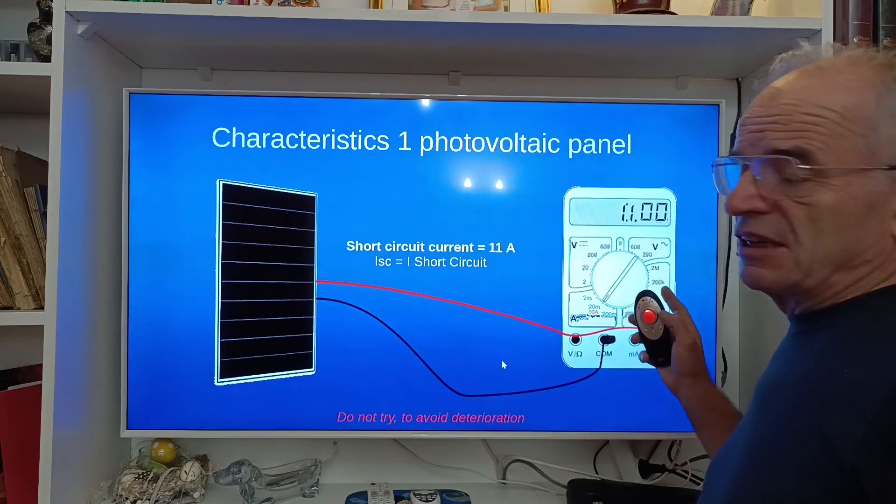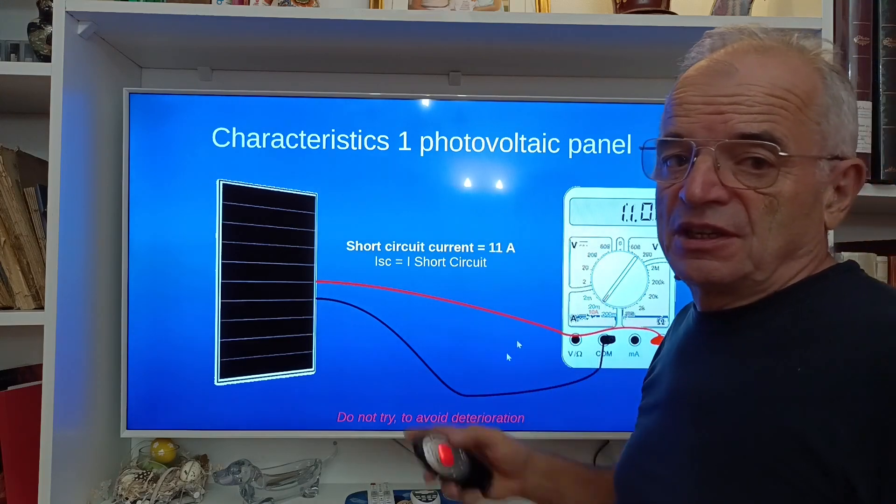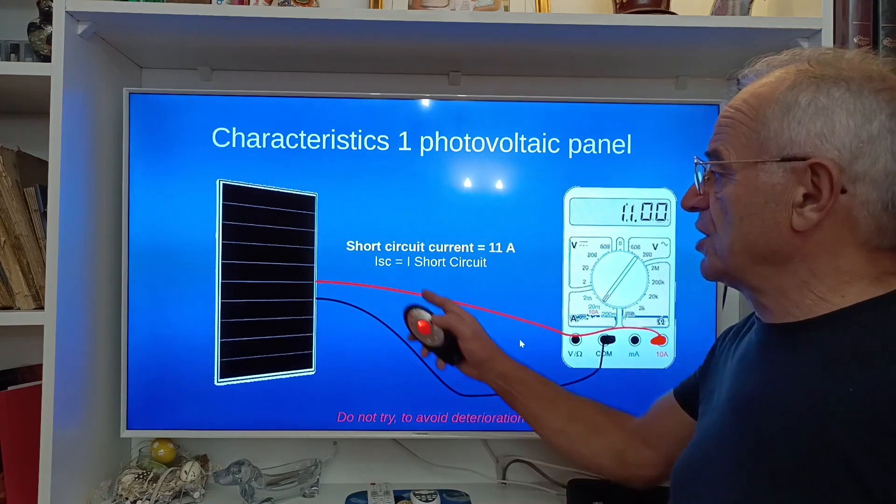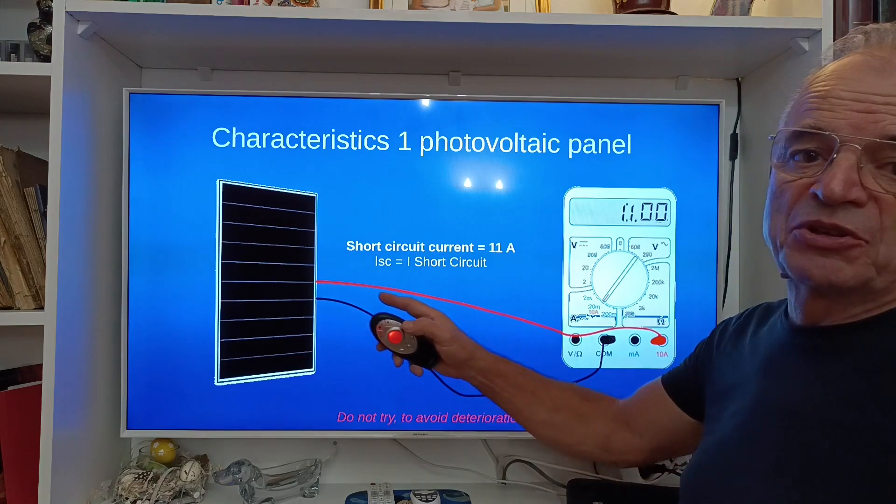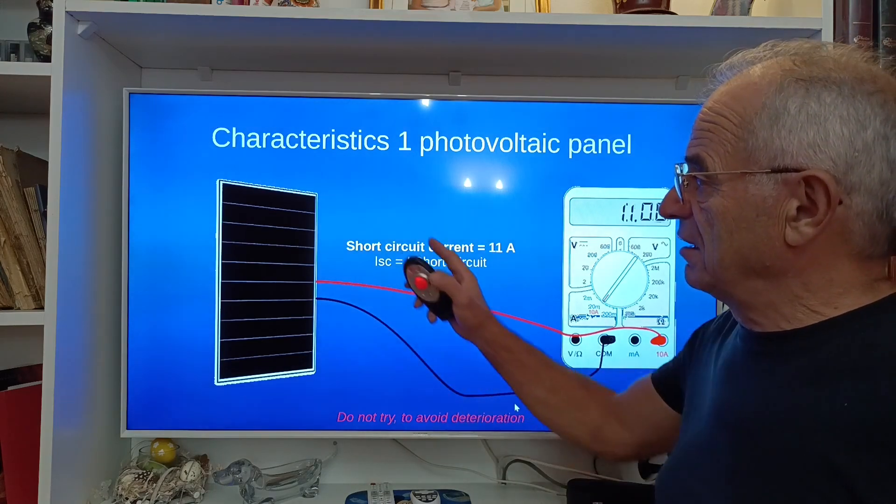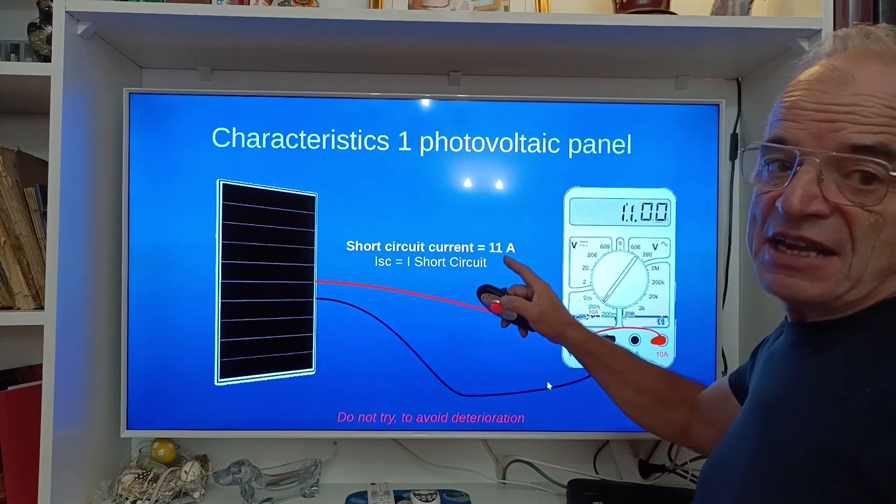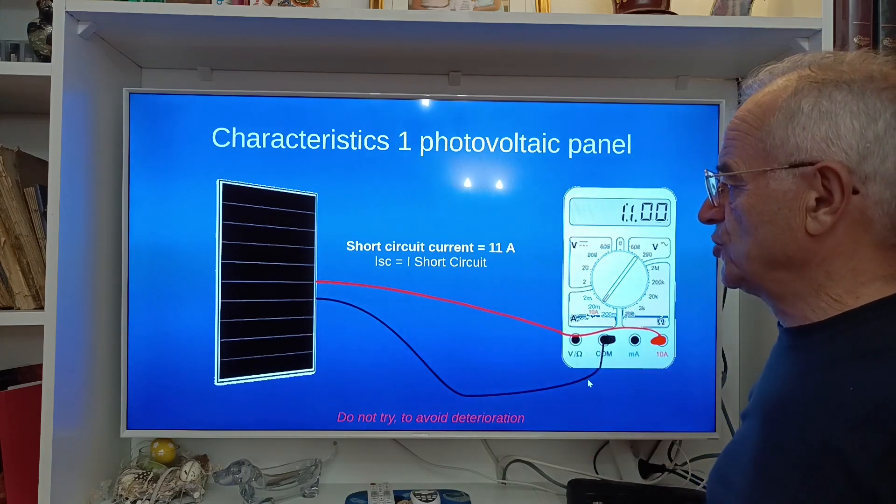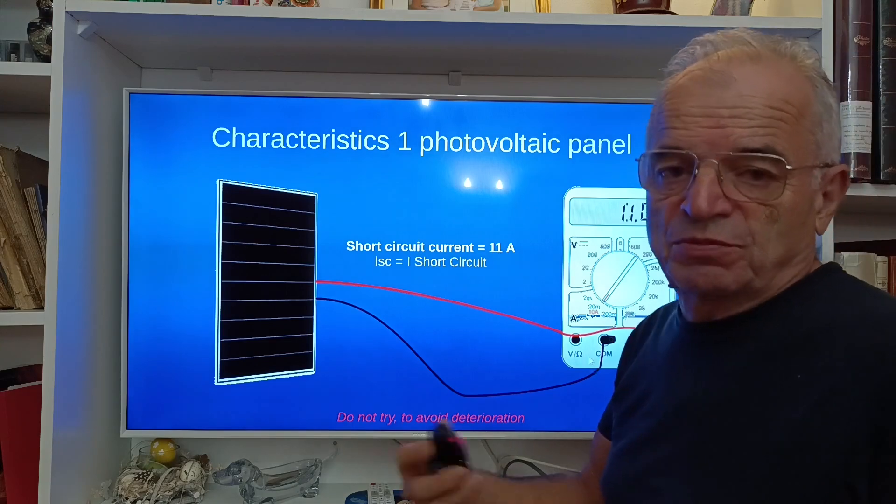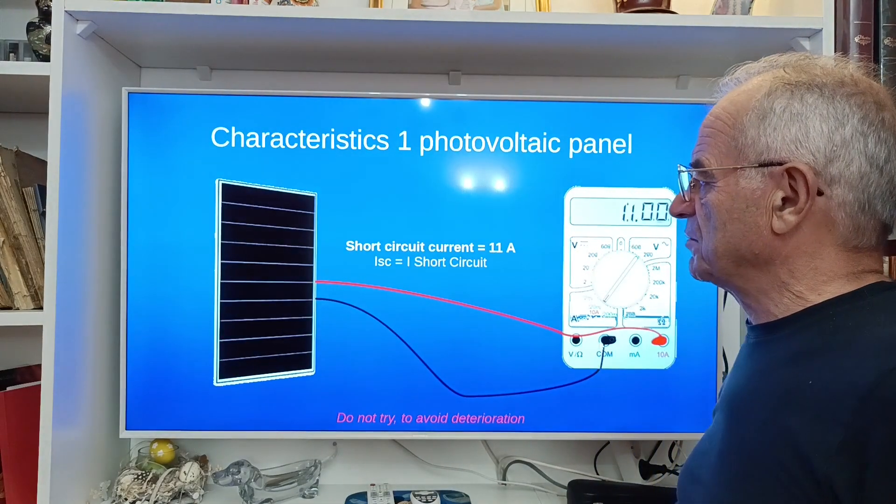Now another characteristic which is very important is to see the short circuit current, so the maximum current this panel can provide. So here for example we have 11 amps as a short circuit current which corresponds to the maximum the system can provide.